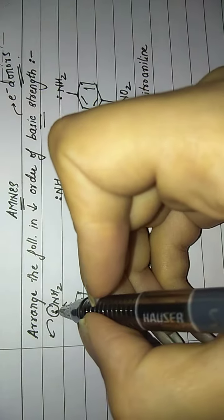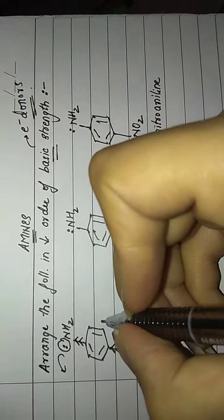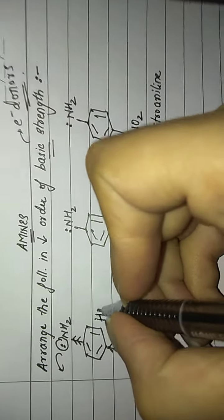As a result of which nitrogen becomes very very electron rich. Because it becomes electron rich, this lone pair of electrons is easily available for donation. So this is highly basic.